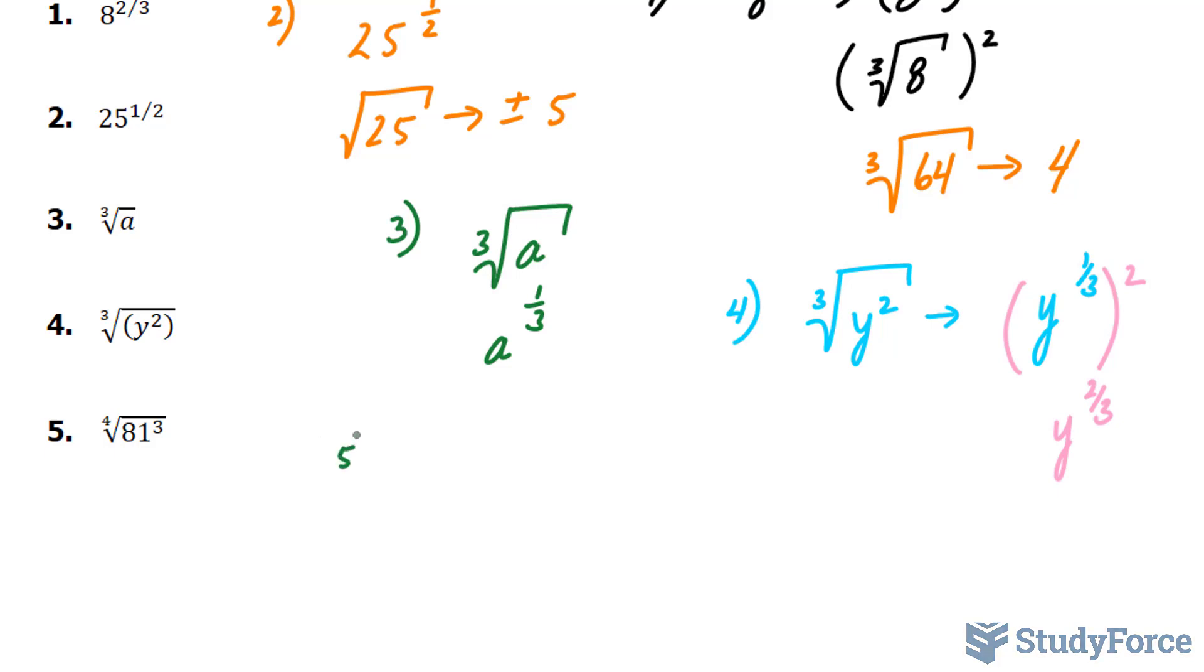In our fifth example, we have the fourth root of 81 to the power of 3. So we have the fourth root of 81 to the power of 3. We're going to use the same logic as we did in question 4.